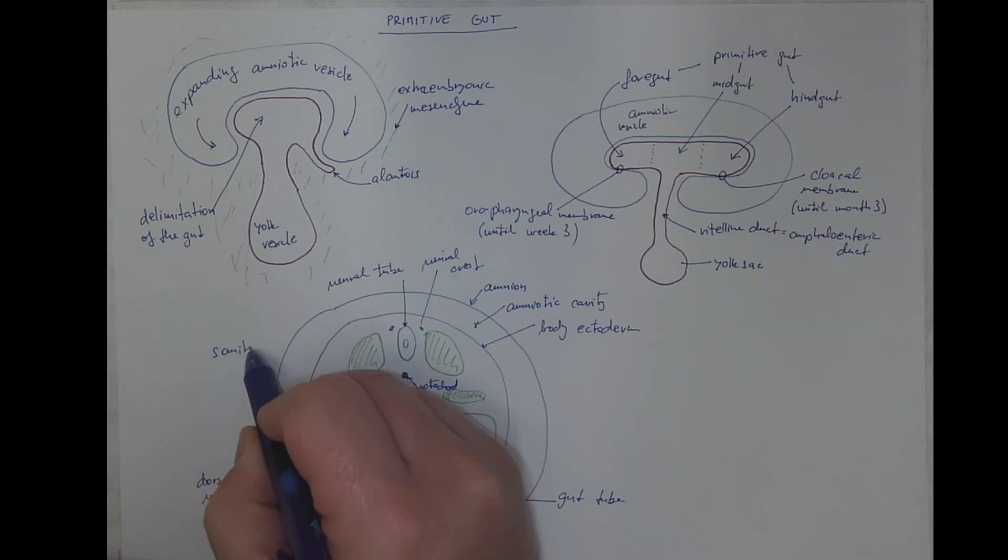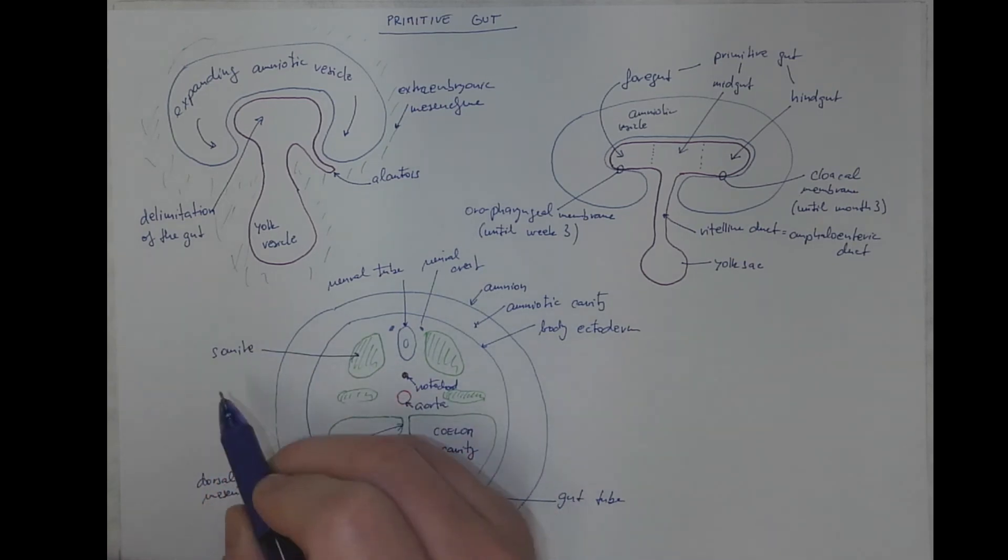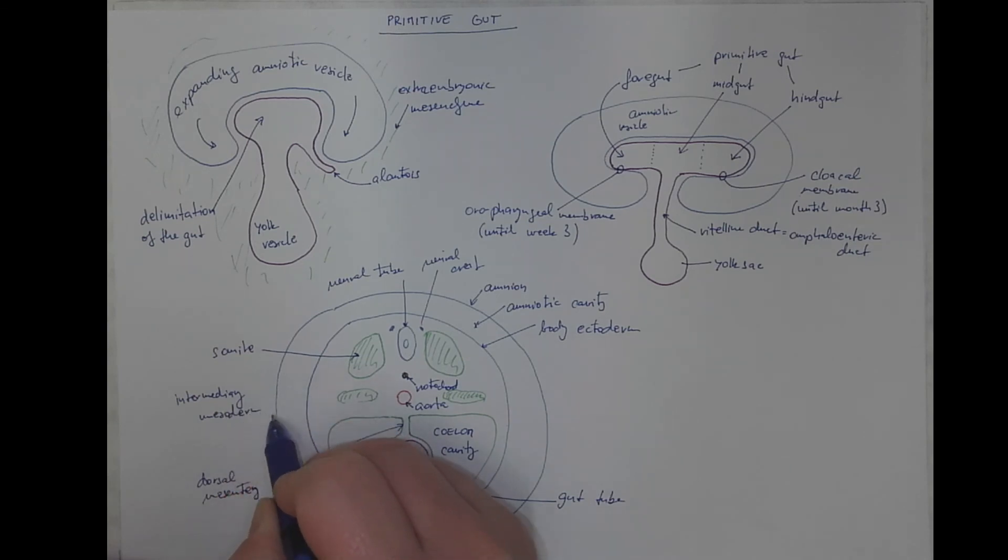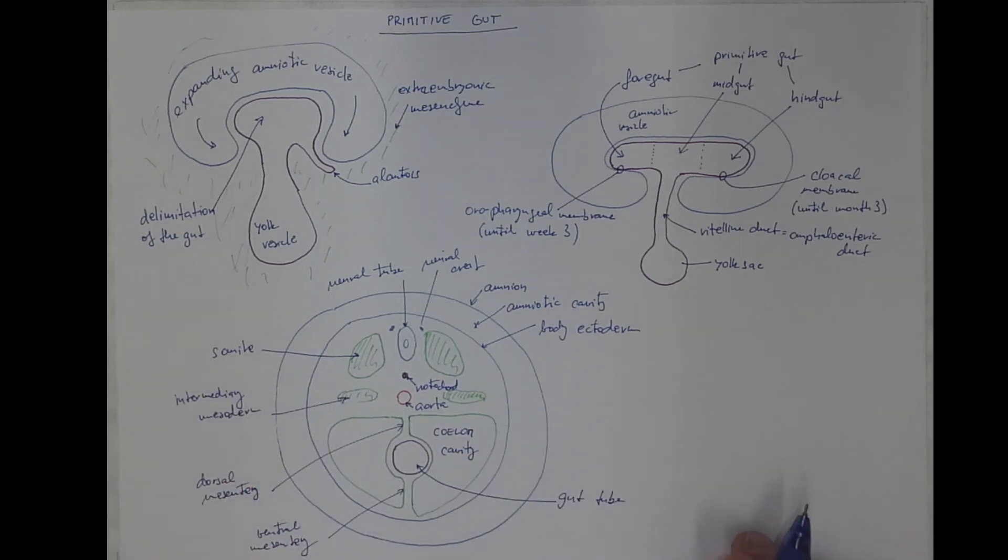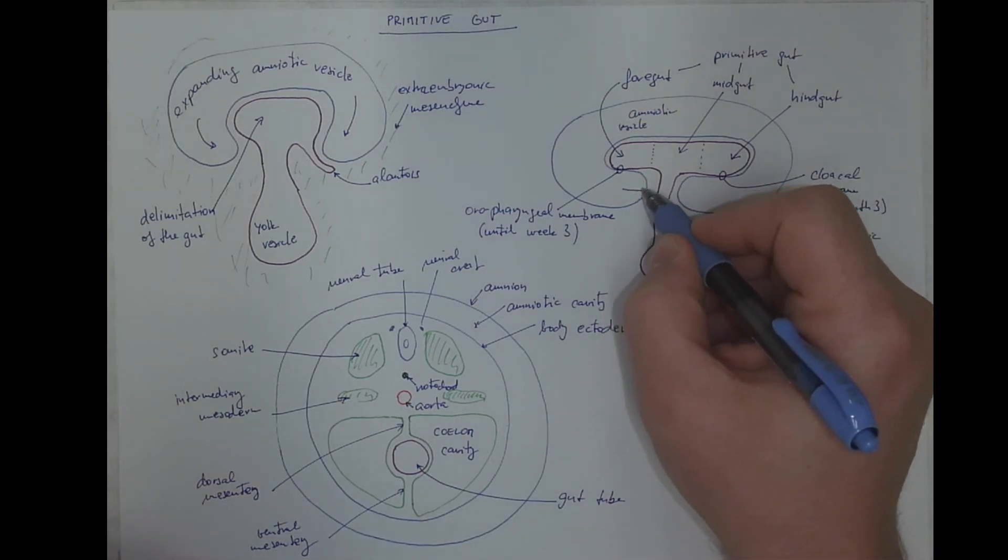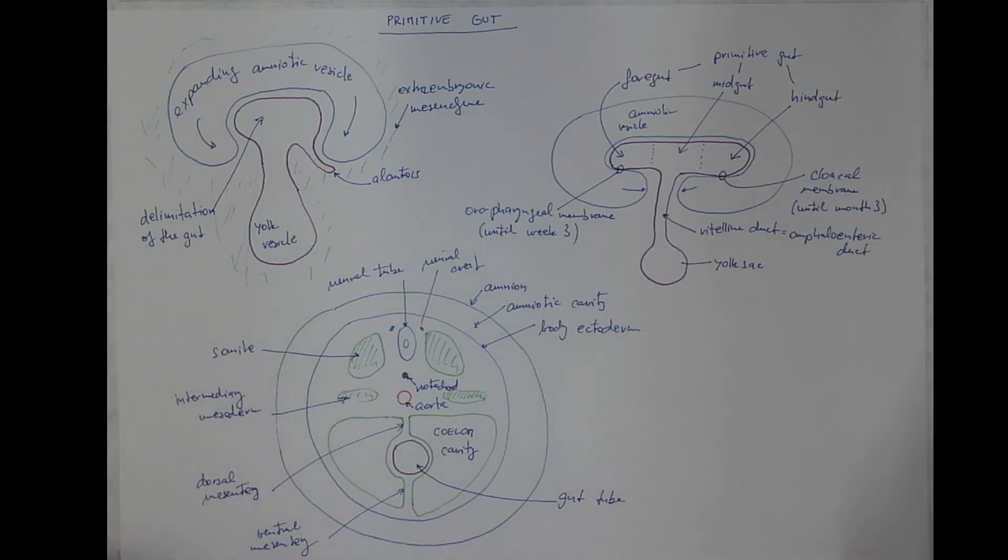And here we got the somites and the intermediary mesoderm. So this ectoderm, this amnion will close the umbilical region later on. Thank you.